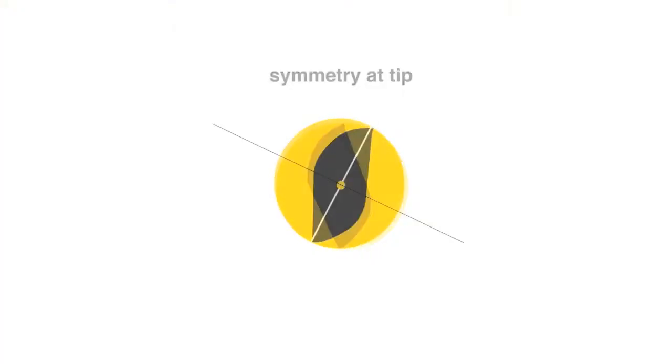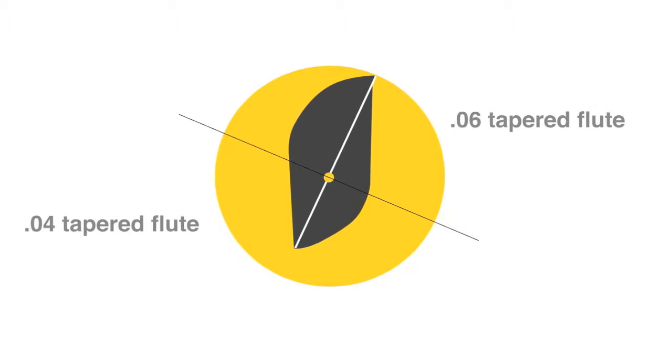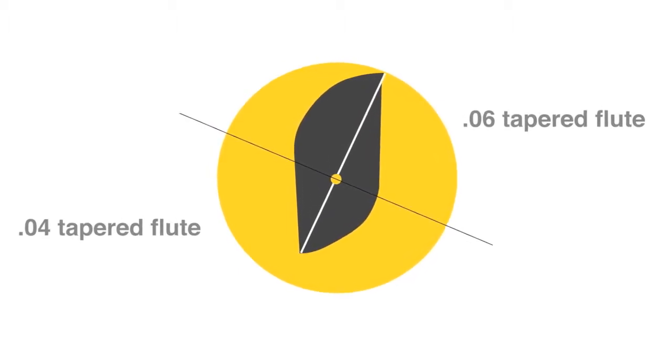At the tip end of the file, the cross-section is symmetrical and each cutting edge projects equally from the file center. As the flutes progress from the file tip to the handle end, the cutting edge projects proportionally a greater distance from its central axis than the opposing cutting edge.